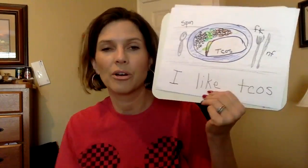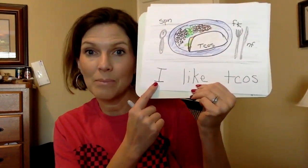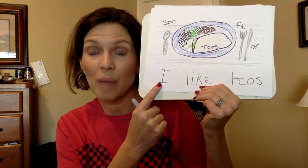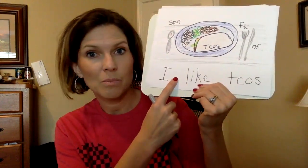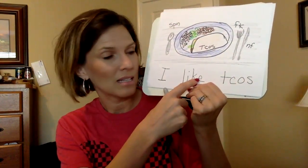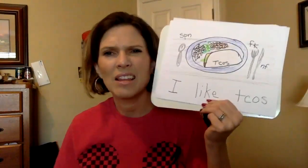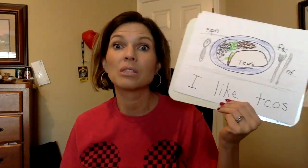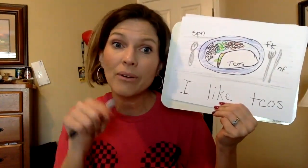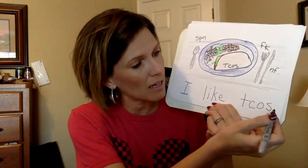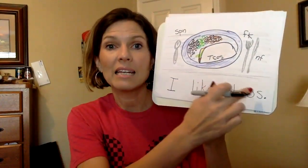I like tacos. Let's check and see if my sentence looks okay. Do I have a capital at the beginning of my sentence? You bet — 'I' starts with a capital. I've got my spaces: I, space, like, space, tacos. Now that's the end of my sentence, so I've got to put something very important at the end — I need punctuation. I need a period that says I am done with that thought. I like tacos.